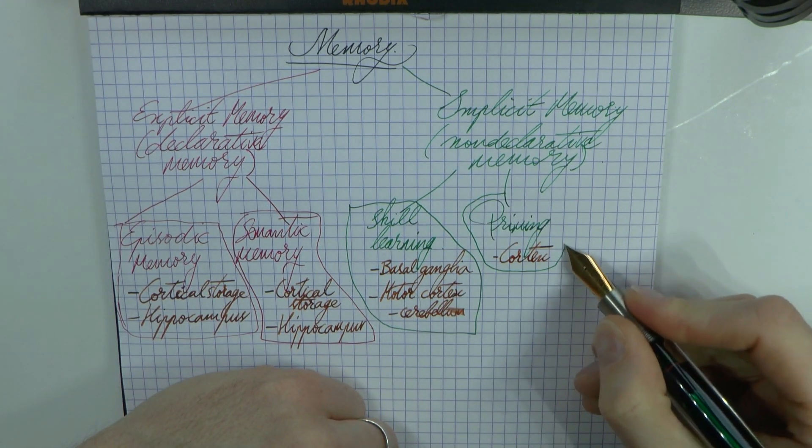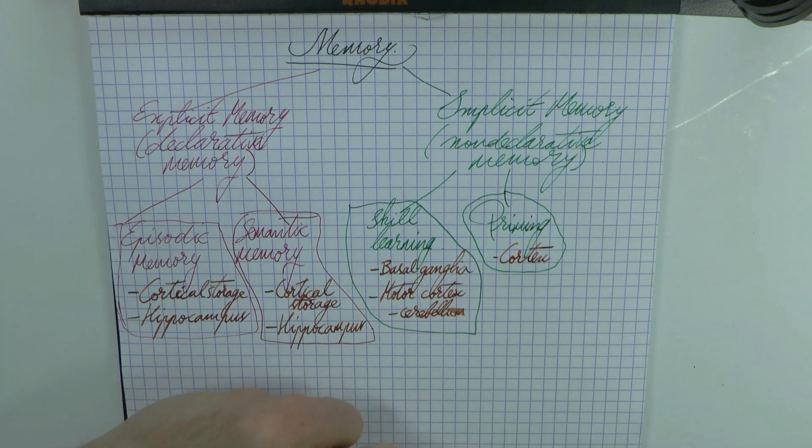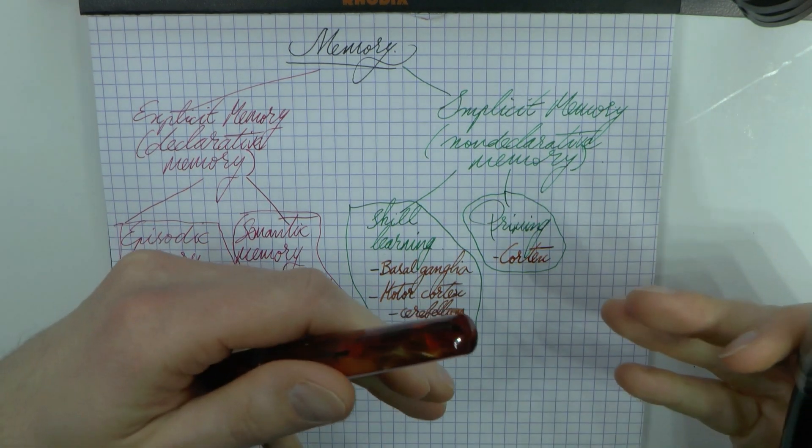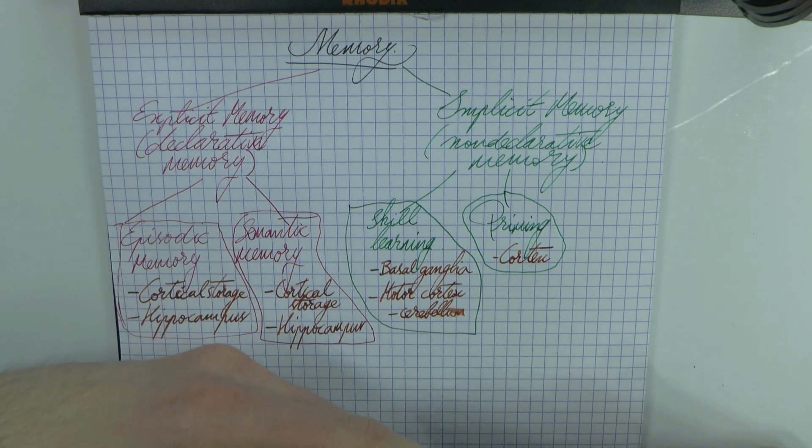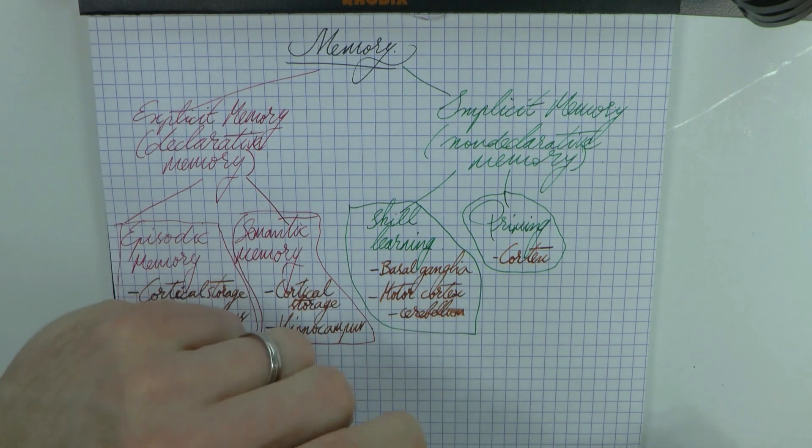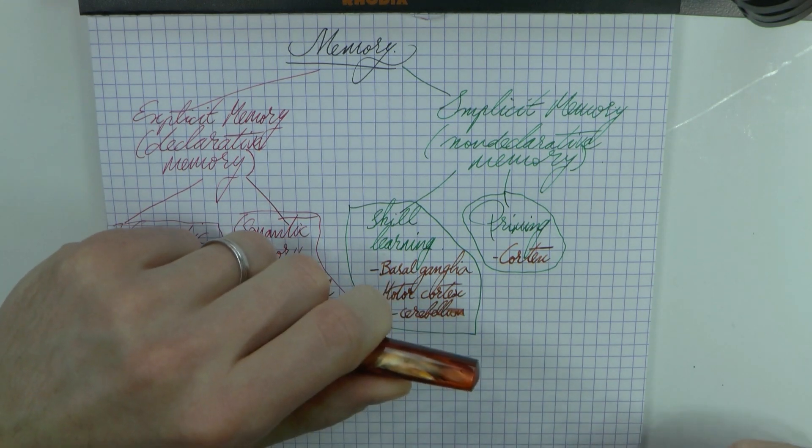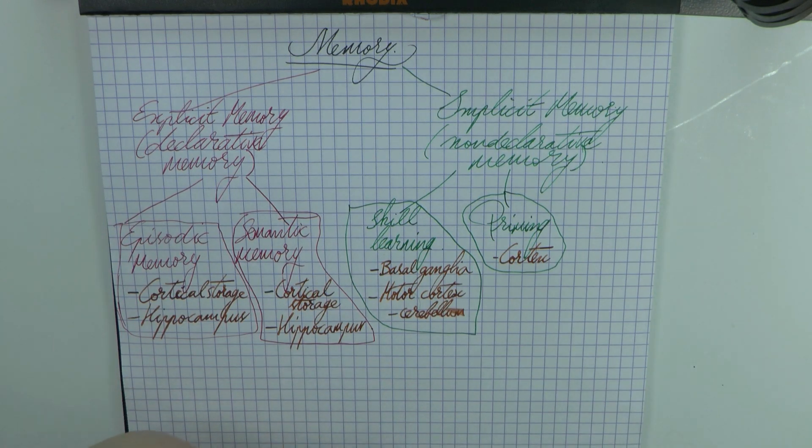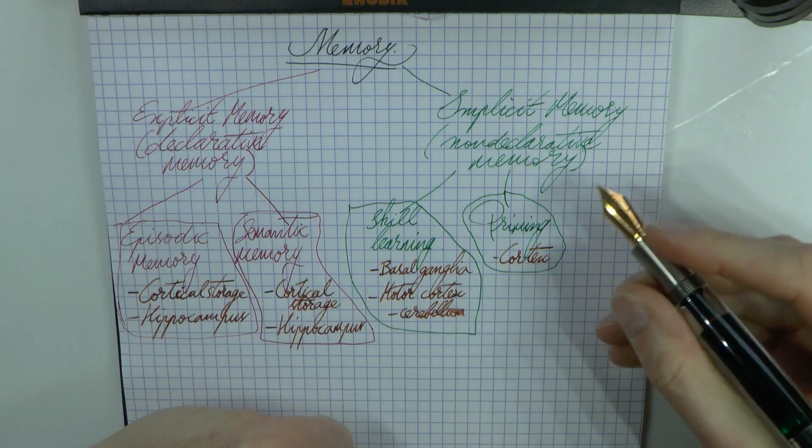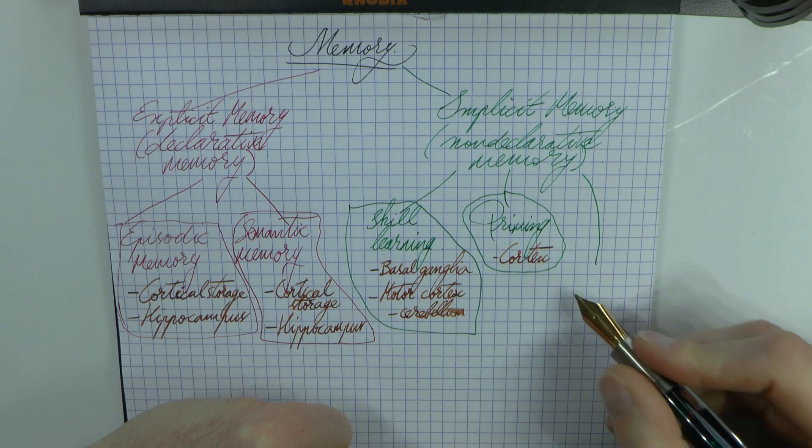This type of memory, priming, is something that we associate with cortex. That kind of makes sense because you may not be conscious of it, but there does seem to be some sort of cortical thing that makes you aware of that prime. You are not consciously aware of having seen it, but it does influence your behavior. I'm cool with the cortex part of that.